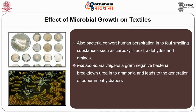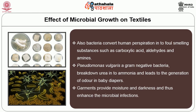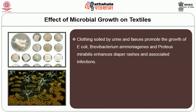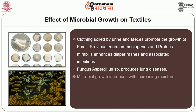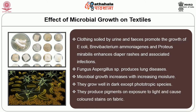Pseudomonas vulgaris, a gram-negative bacteria, breaks down urea into ammonia and leads to the generation of odor in baby diapers. Garments provide moisture and darkness and thus enhance microbial infections. Clothing soiled by urine and feces promote the growth of E. coli, Brevibacterium ammoniagenes and Proteus mirabilis, enhancing diaper rashes and associated infections. Fungus Aspergillus species produces lung diseases. Microbial growth increases with increasing moisture. They grow well in dark except phototrophic species, and produce pigments on exposure to light causing colored stains on fabric.